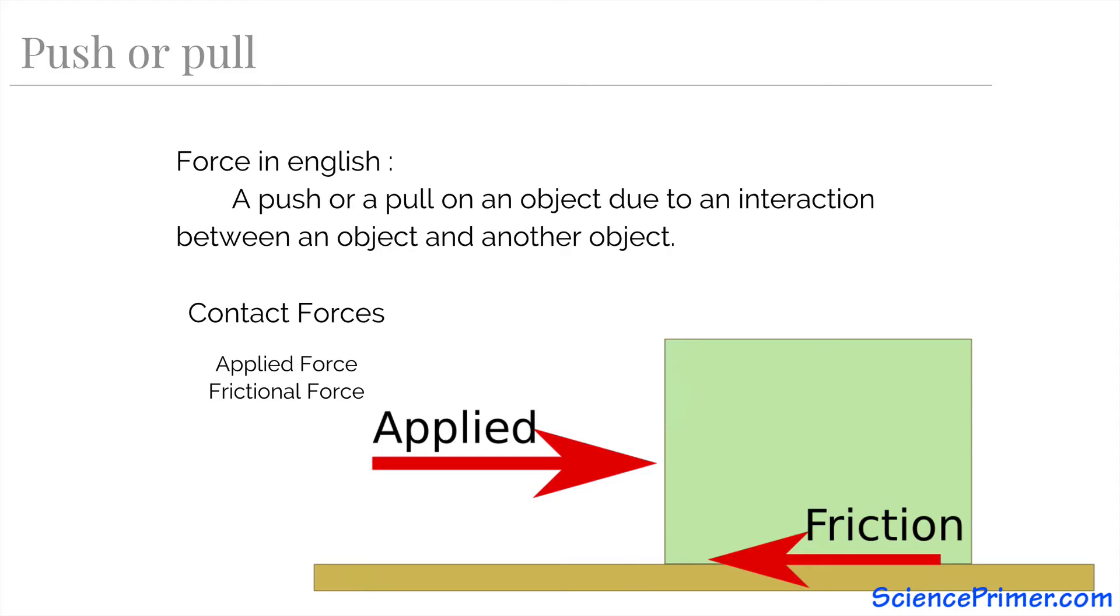Friction results from molecular interactions between the two objects as they slide past each other. In the case of a block sliding on a surface, friction works opposite to the direction of motion and will cause the block to slow and eventually stop. It is also why a real ball in a real bowl doesn't continue to roll forever like the one in Galileo's thought experiment.